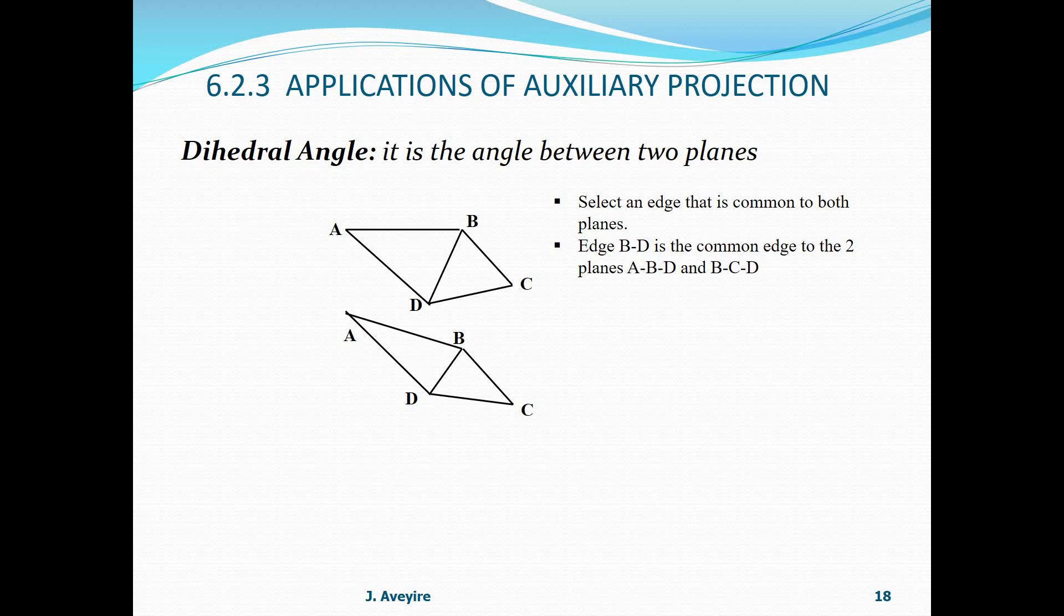Therefore, we need a view in which that edge, BD, is a true length. We project perpendicular to BD in any of the views. Here, the top view has been selected. Therefore, the first auxiliary projection is perpendicular to the edge BD.